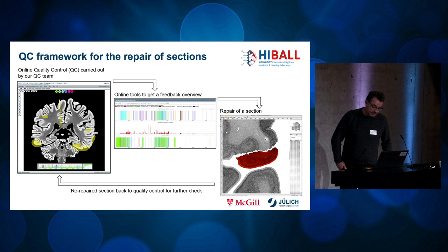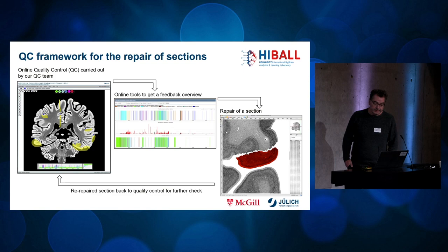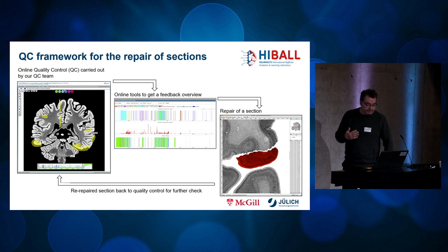Quality control is an essential component of any complex framework. Here, it means that every section in every processing step must be visually checked to ensure that all processing steps have led to the desired result. We use an online tool that allows different types of feedback annotations to be placed. The result of our team of raters coming from Paris, Montreal, and Jülich can be viewed online, and based on their feedback a decision can be made as to which sections require further or renewed repair or new processing.